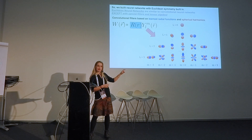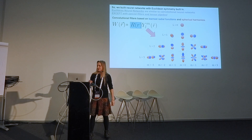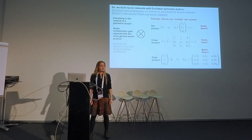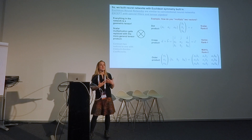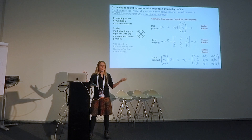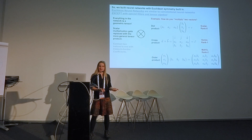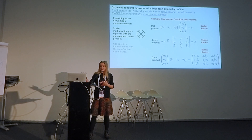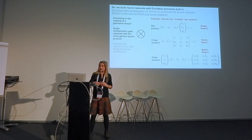If you have something expressed in a single frequency of spherical harmonics and you rotate your signal, it stays in the same frequency — that's a really nice property. Furthermore, everything in our network is a geometric tensor. We can't just use scalar multiplication; we have to use the more generalized tensor product. If I have two vectors and tell you to multiply them, it's ambiguous: dot product gives a scalar, cross product gives another vector, outer product gives a 3×3 matrix. So we have specialized filters and must obey tensor algebra in our networks.